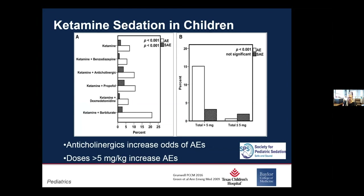Thinking about ketamine specifically — do anticholinergics increase the odds of adverse events? If secretions and upper respiratory infections may put patients at higher risk, would anticholinergics help? This study from the consortium showed that the risk of serious adverse events was increased in patients who had received anticholinergics, and in patients who had a dose greater than 5 mg/kg of ketamine. We know that at those higher doses, ketamine has an increased dose-effect relationship with adverse events.